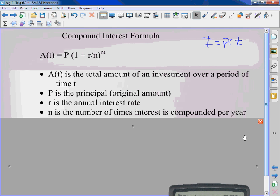Sometimes you hear things, it's compounded quarterly. What does quarterly mean? Every three months. T is the amount of time in years.